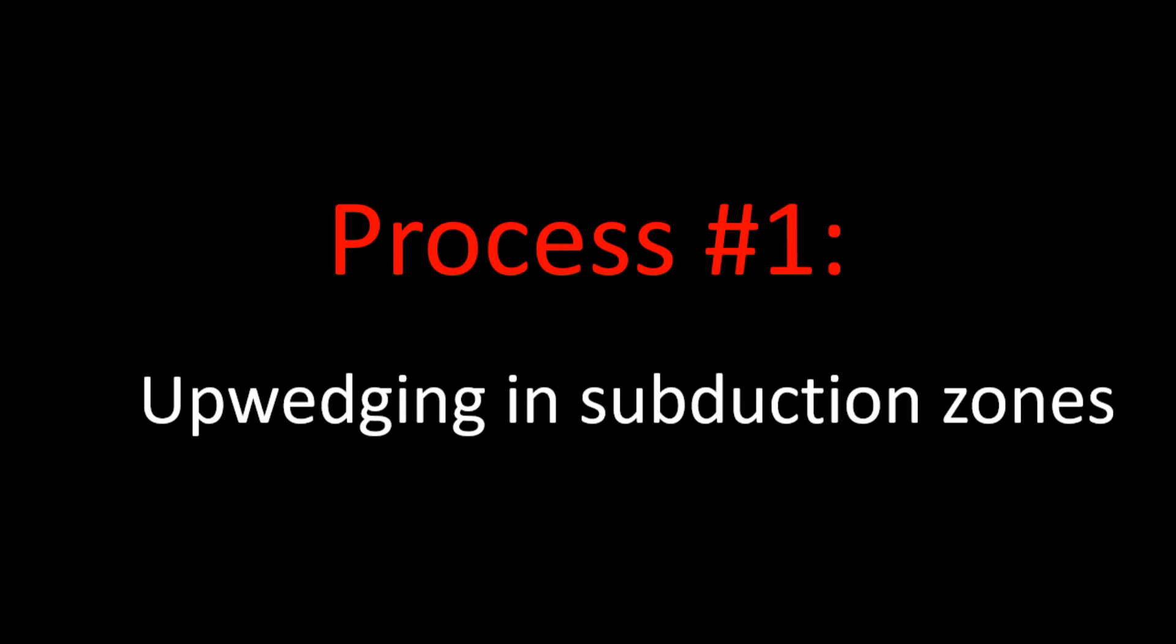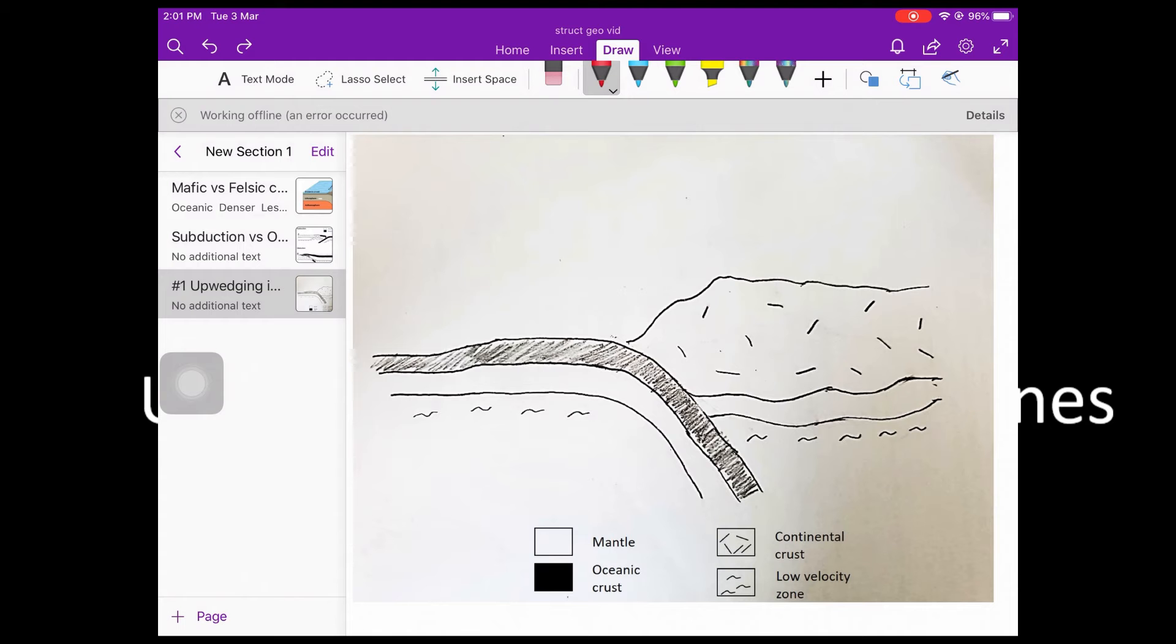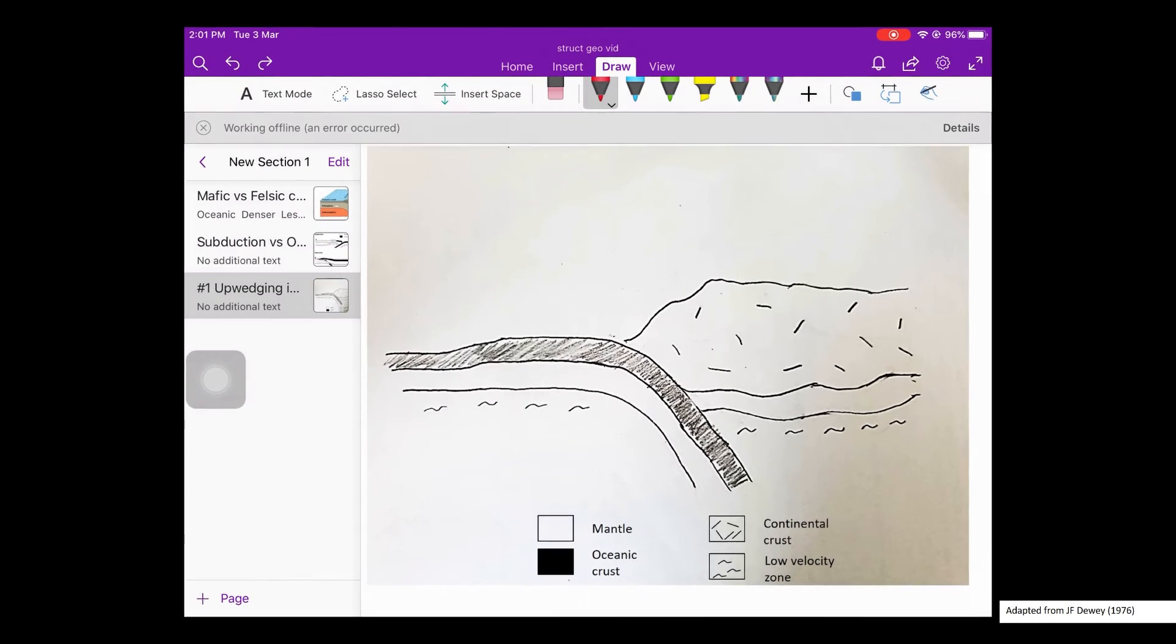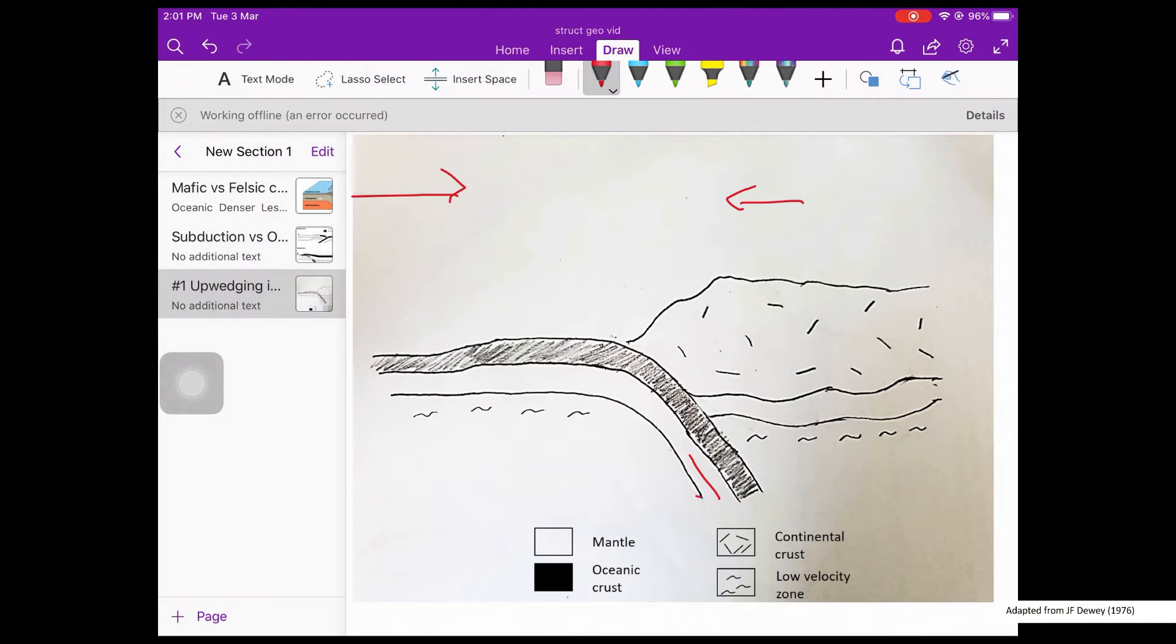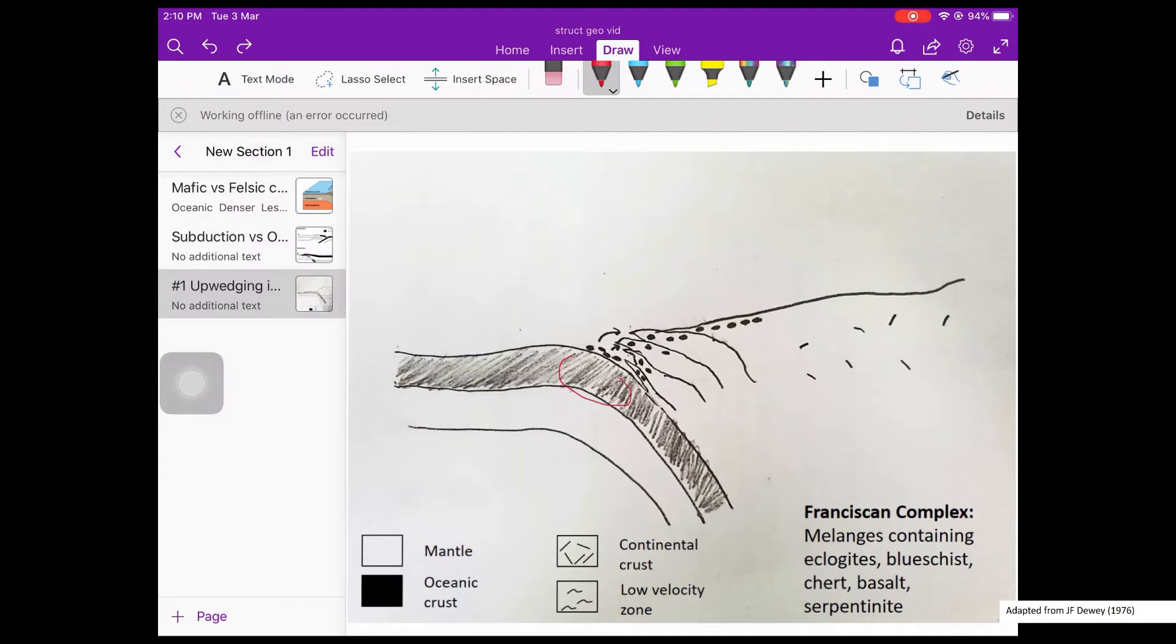So now, let us talk about the first obduction mechanism: up-waging in subduction zones. This process can occur beneath and behind the inner walls of subduction zones. We have compressional forces acting this way and this way, and the oceanic crust is being subducted here. Seismic studies have shown that while the oceanic crust is subducting, the upper part of the plate, where it bends and descends, can experience tensional stress.